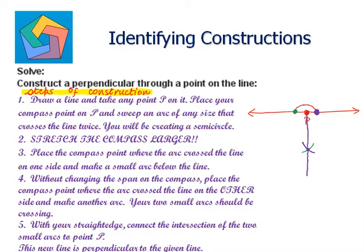This new line is the perpendicular to the given line. If we draw these arcs above the line from each intersecting point, we will get the perpendicular above the line as well. So we can create a perpendicular through a point on the line either above it or below it.